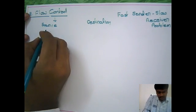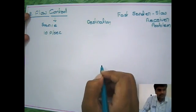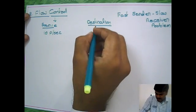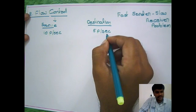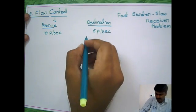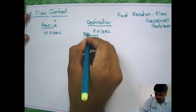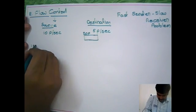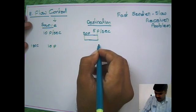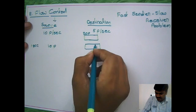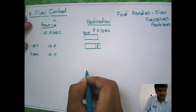Suppose the source is sending 10 packets per second, but the destination is receiving and processing only 5 packets per second. Assume the destination has a buffer with a maximum capacity of 20 packets. In the first second, 10 packets are sent; 5 are processed and the remaining 5 are stored in the buffer. In the second second, 10 more packets arrive.